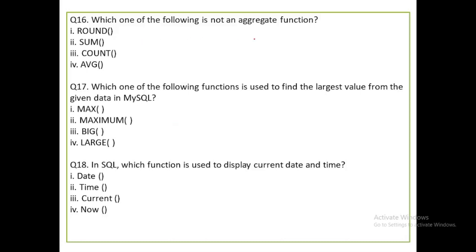Which one of the following is not an aggregate function? SUM, COUNT, and AVG are aggregate functions. But ROUND is a math function, not an aggregate function. So the correct answer is ROUND — option one is correct.